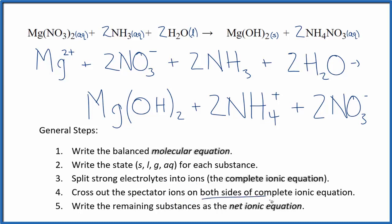They're on both sides of the equation here. So I see I have two nitrate ions here in the reactants and again in the products. Those are spectator ions. We can cross those out, but everything else is unique.